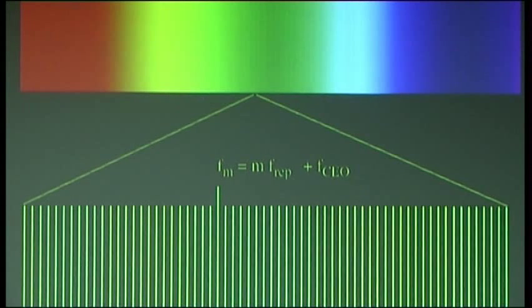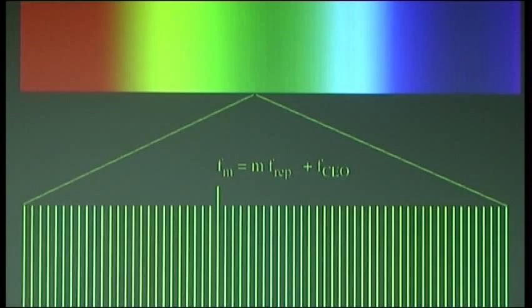But if you have an octave-spanning comb, one can measure this carrier envelope offset frequency — the slippage rate of the carrier phase relative to the envelope — by taking comb lines from the red end of the spectrum, sending them through a nonlinear crystal that produces second harmonics, new comb lines shifted by twice this offset, and then looking at the collective beat note of the new comb lines and the original ones at the blue end. You get an interference signal precisely equal to this carrier envelope offset frequency.